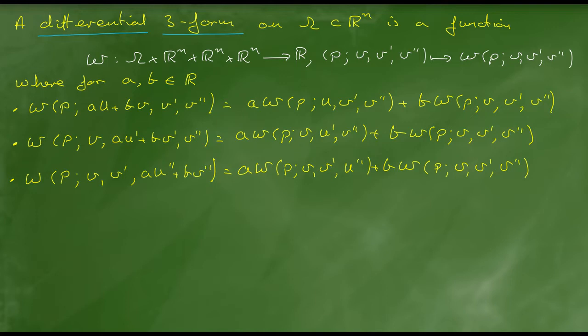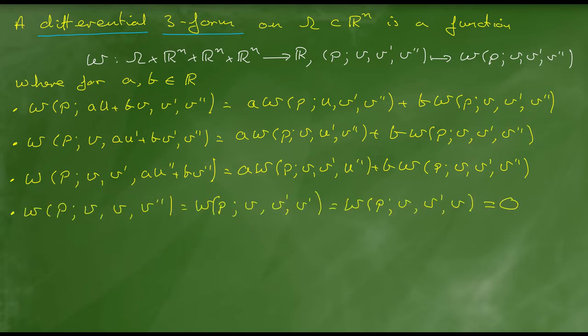It has to be linear in the first input vector V, as expressed by the first of the equations. It has to be linear in the second input vector V', as expressed by the second of the equations. And the three-form has to be linear in the third input vector V''. Furthermore, if two of the input vectors are identical, then the returned number has to be zero. If the first two input vectors are identical, the value of omega has to be zero. If the second two input vectors are identical, the value of omega has to be zero.